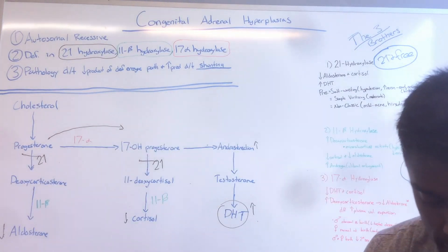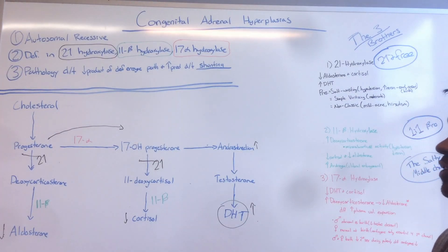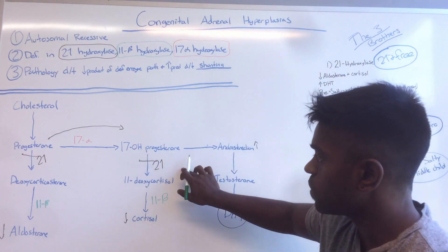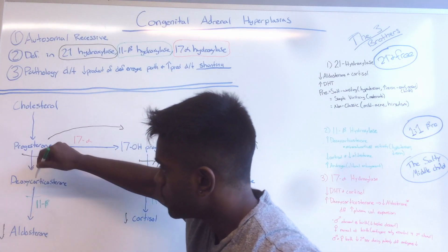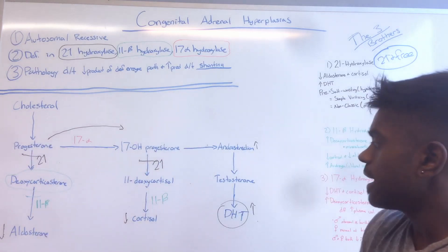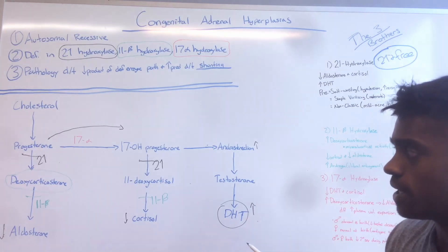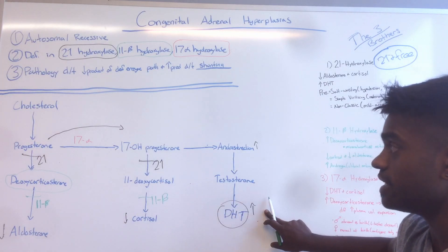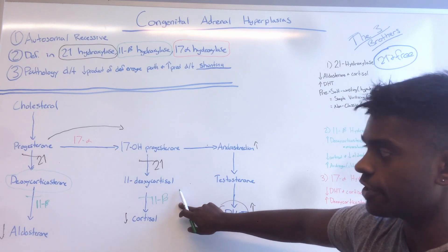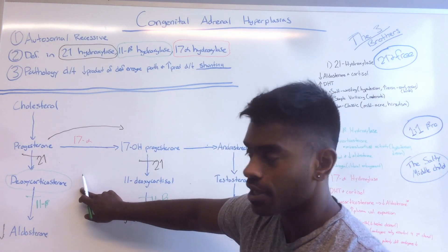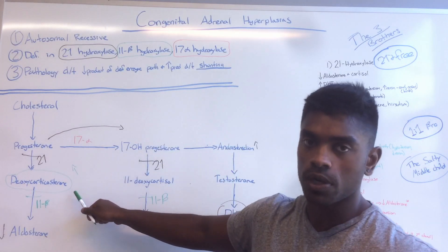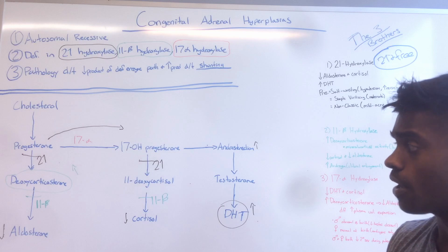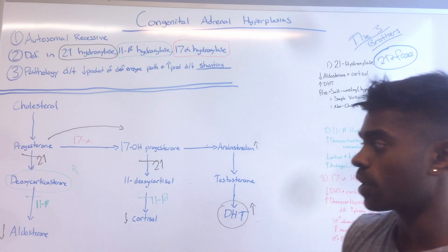Now let's talk about 11-beta-hydroxylase deficiency. As we can see, it's involved in almost the same roads as 21-hydroxylase. However, there's an extra compound here called deoxycorticosterone, and the roadblock occurs after deoxycorticosterone, so this is going to build up. Although we're still going to have a decrease in aldosterone, a decrease in cortisol, and an increase in DHT — as with 21-hydroxylase — deoxycorticosterone is a mineralocorticoid, so as a result, there's going to be hypertension. Therefore, there's not going to be a need for aldosterone regardless.